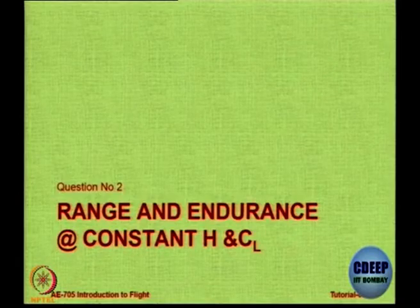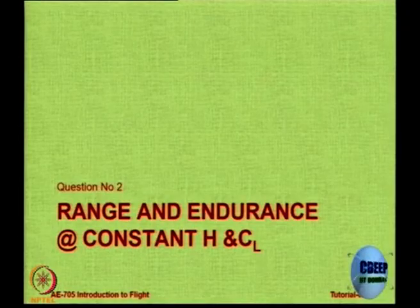We will look at an example where the height remains constant and the C_L remains constant during cruising. This is a live example of a turbojet engine aircraft. There is some data about the aircraft: wing loading is given, thrust SFC is given, cruise fuel weight fraction is given, aspect ratio, Oswald efficiency factor, C_D0 (parasite drag coefficient), and the cruising speed are all given to you.